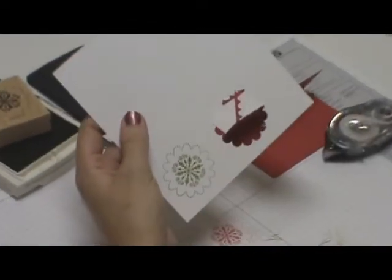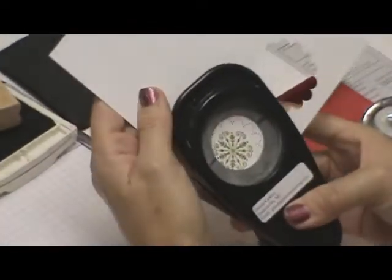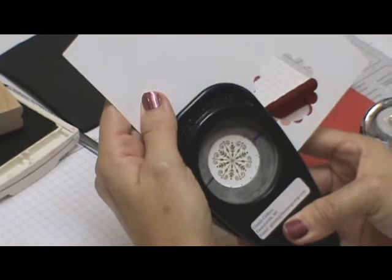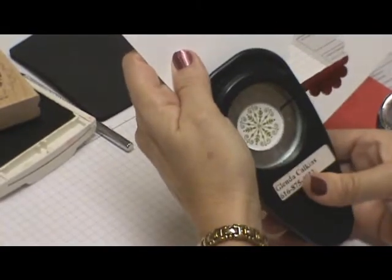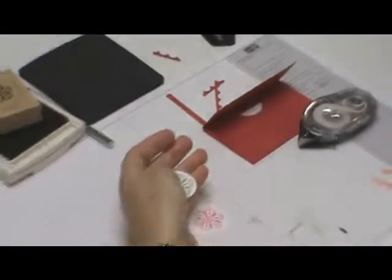1 1/4" circle punch, and just punch out that center. Then I'm going to take my paper piercer and poke a hole right in the center.